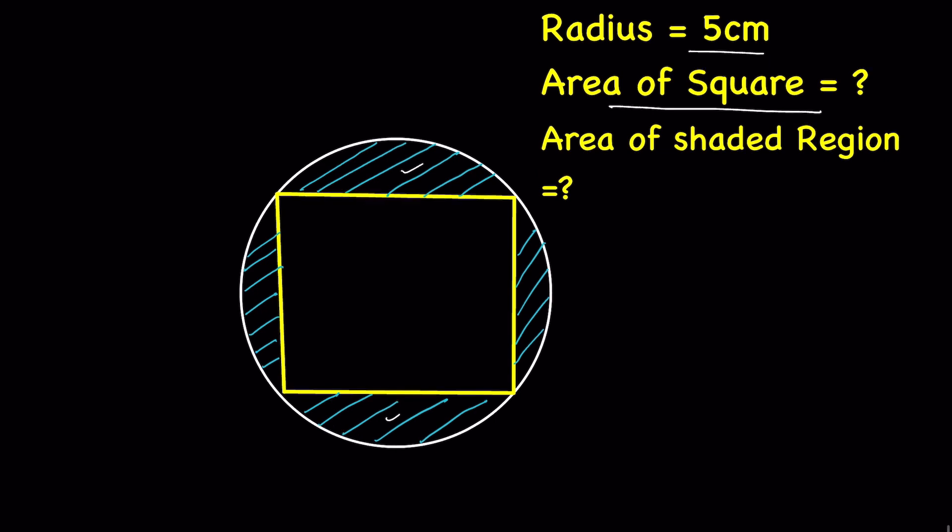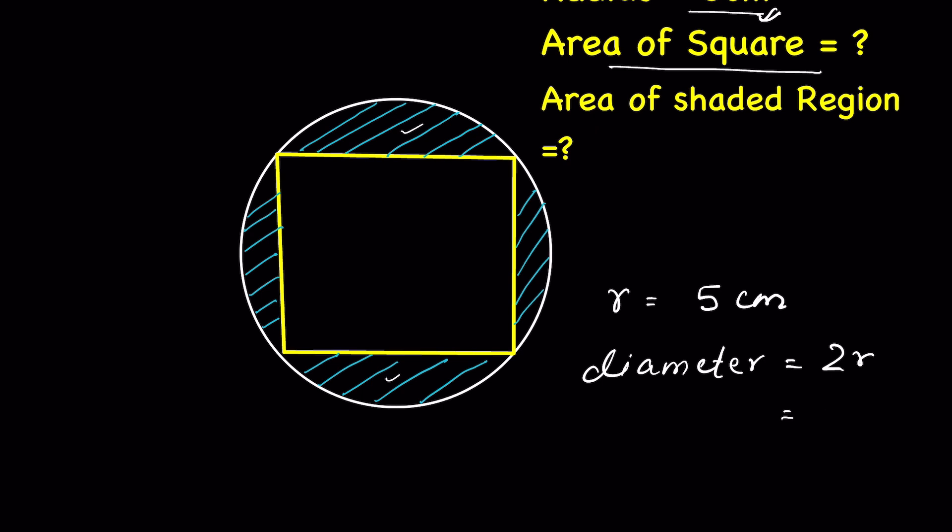So, how do we solve it? If radius is 5 cm, let's say R here is 5 cm, then diameter of a circle is 2R. So it will be 2 times 5 is equal to 10 cm.